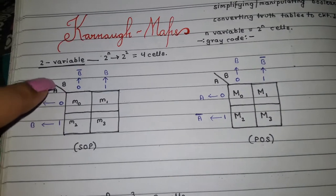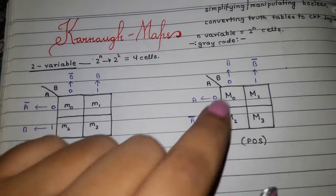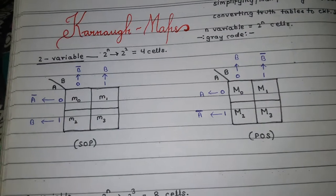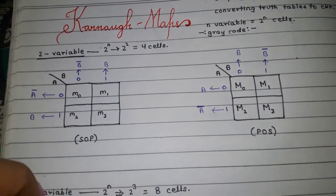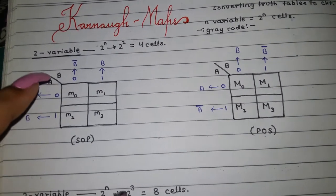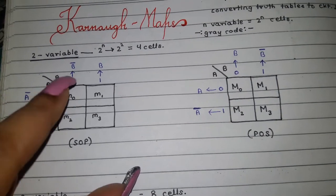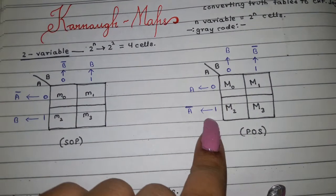Then we start numbering from zero. Always start numbering from zero: it is zero then one, zero then one, here also zero then one, zero and then one.